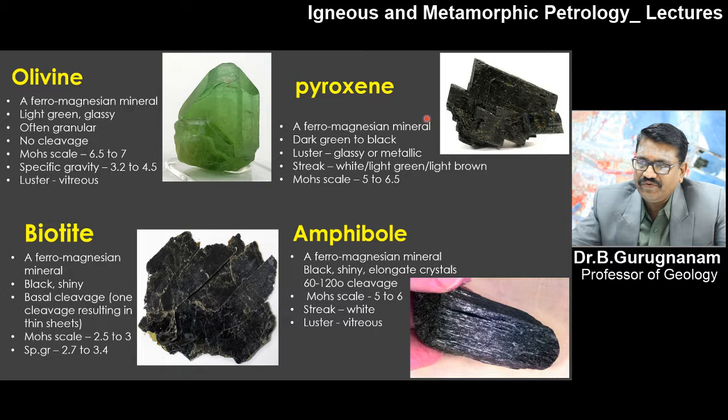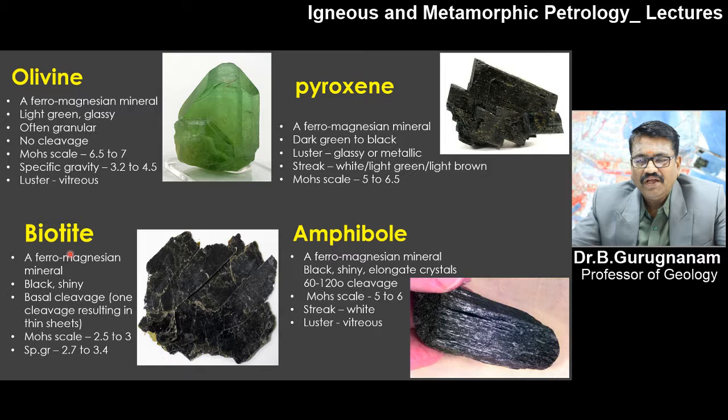Pyroxene is also a ferromagnesian mineral — that is why it looks dark green to black in color, glassy and metallic with a sheen on its surface. The streak is white to light green to light brown, and the Mohs scale hardness is 5 to 6.5.